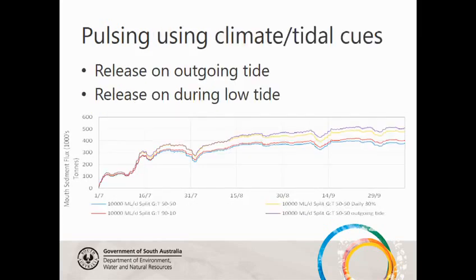The final piece of modelling tried to use tidal cues to influence how the barrages would be operated — specifically releasing on the outgoing or low tide. This was to increase velocities during the outgoing tide to try to remobilise sediment for removal. The results show that for both the pulsing scenarios, a greater amount of sediment removal was achieved than with constant flow, and for the 50-50 split you could get greater sediment removal than the 90-10 split favouring Gulwa.